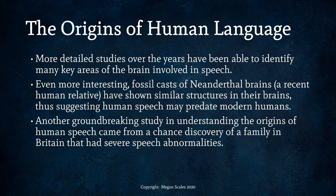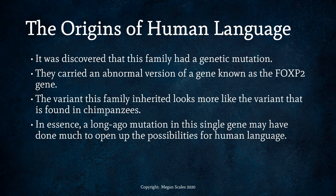Neanderthals weren't necessarily our ancestors — they were more like the cousins of Homo sapiens sapiens, living from around 130,000 years ago to around 30,000 years ago in Europe and the Middle East. Another clue about the origins of human speech came from a chance discovery of a family in Britain that had severe speech abnormalities. It was discovered that this family had a genetic mutation — they carried an abnormal version of a gene known as the FOXP2 gene. The variant this family inherited looks more like the variant found in chimpanzees, suggesting that a long-ago mutation in this single gene may have done much to open up the possibilities for human language.